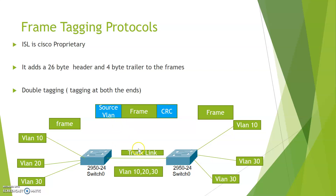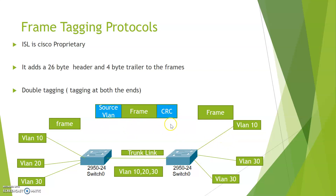Since the trunk link transports multiple VLANs across the same link, at the transmitting end it will encapsulate the frame with the source VLAN and CRC information. At the receiving end it will strip off both tags, check which frame belongs to which VLAN, and once it identifies all the VLAN information, it will transport the original frame to the end VLAN.